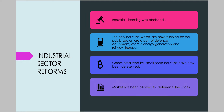Industrial licensing was abolished apart from a few industries such as alcohol, cigarettes, drugs, explosives, etc. Public sector was now de-reserved for most of the industries. Only critical industries like atomic energy, railway and defence were now reserved for the public sector.